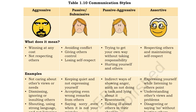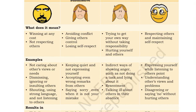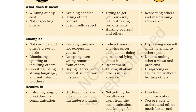सबसे पहले आता है aggressive. Aggressive का मतलब क्या होता है — आपको किसी भी cost पर बस winning करना है, आपको जीतना है, दूसरों की कोई respect नहीं करते हो। Examples क्या हो सकते हैं — दूसरों का point of view, दूसरों की needs, उसकी कोई भी care नहीं करना, दूसरों को ignore करना, उनकी insult करना, shouting करना, strong language का use करना, दूसरों की बातों को नहीं सुनना। इसका result क्या होगा — आपको bad feeling हो जाएगी, गुस्से में हो जाओगे, आपका जो communication है वो breakdown हो जाएगा।